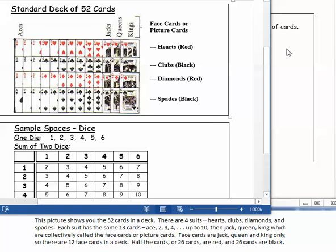This picture shows you the fifty-two cards in a deck. There are four suits: hearts, clubs, diamonds, and spades. Each suit has the same thirteen cards: ace, 2, 3, 4, up to ten, then Jack, Queen, King, which are collectively called the face cards or the picture cards. The face cards are Jack, Queen, and King only. So there are twelve face cards in a deck. Half of the cards or twenty-six cards are red and twenty-six cards are black.